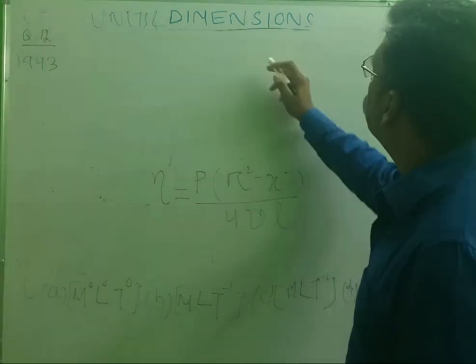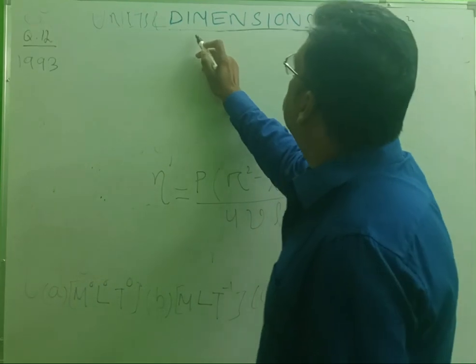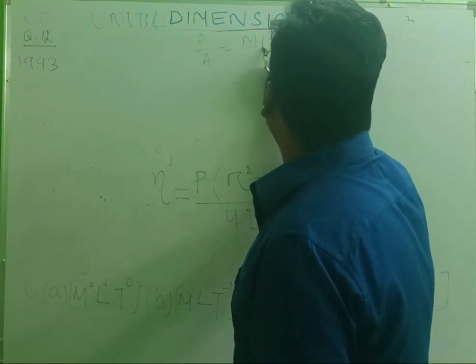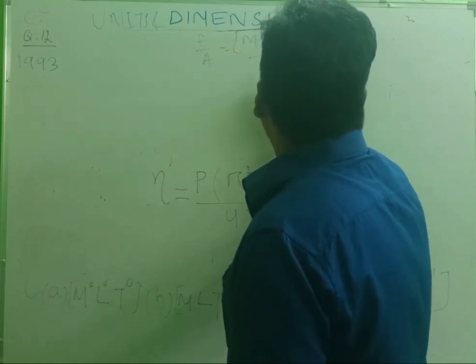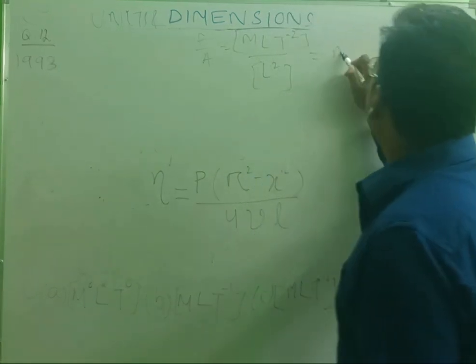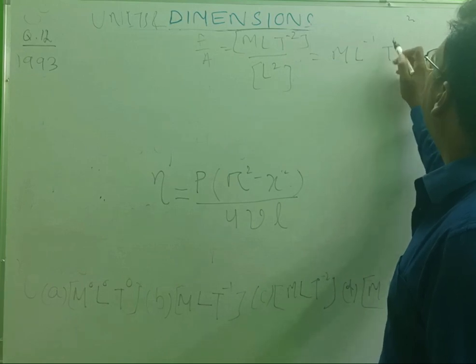What is the dimensional formula of P pressure? That is force by area equals MLT minus 2 divided by L squared. This is equal to ML minus 1 T minus 2.